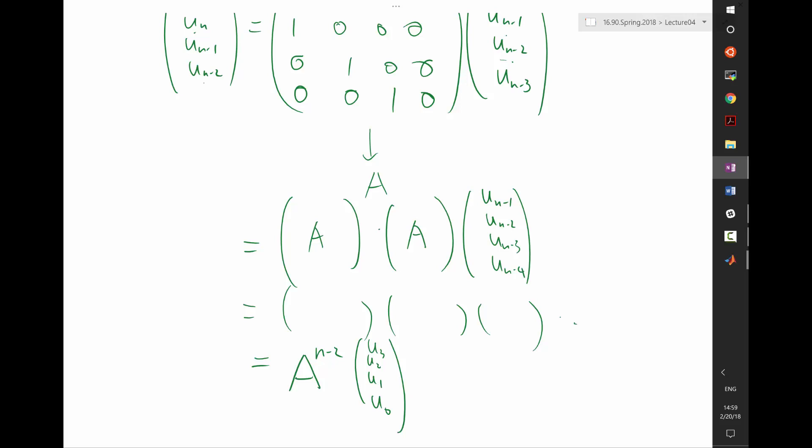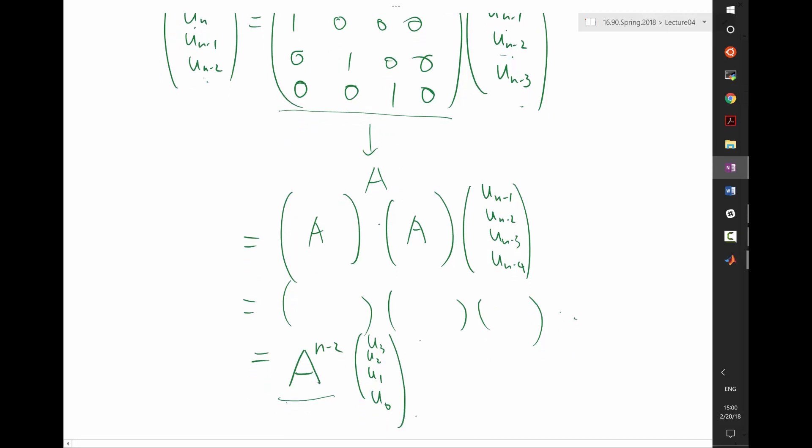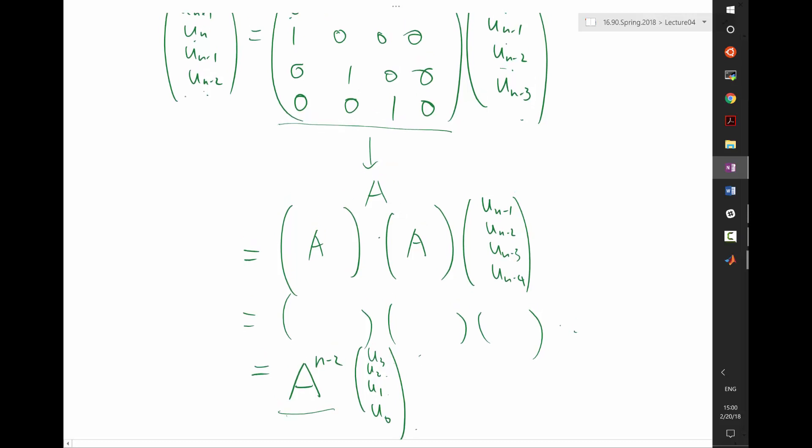All right. Any questions on that? Well, this A to the n minus two power is just the repeated multiplications of the same matrix. What's the behavior of repeated multiplications of the same matrix? It's n minus two because every time I multiply by the matrix, the indices are shifted by one, right? Now, when I started the iteration, my u's are u_0, u_1, u_2, u_3. And I need enough matrices to shift the u_{n-2} all the way to u_0. So how many matrices do I need to multiply? n minus two, right?